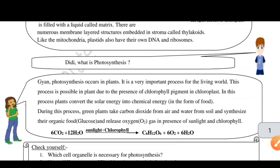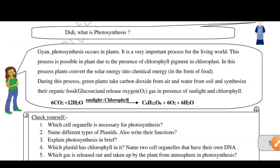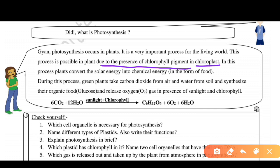Next question: what is photosynthesis? Photosynthesis is an important process of living organisms, specifically plants. It occurs because of chlorophyll within the chloroplast. During this process, solar energy is converted into chemical energy.